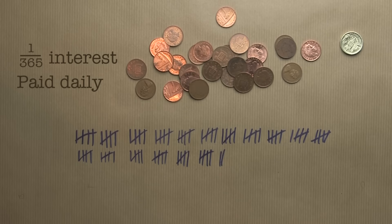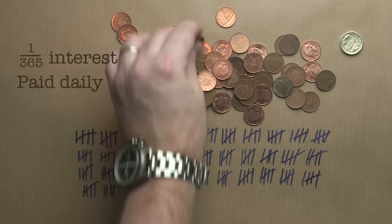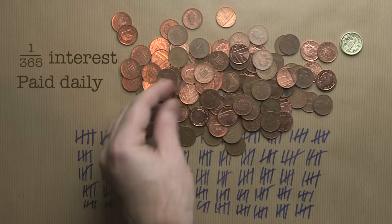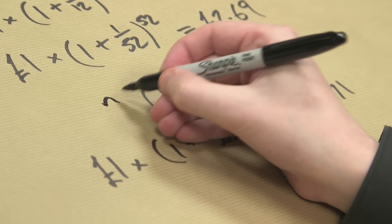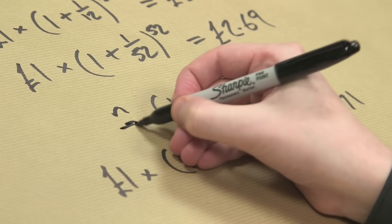It would get better if you did it every second or every nanosecond. What if I could do it continuously? Every instant I'm earning interest — continuous interest. That means if I take this formula, 1 plus 1 over n to the n, and take n to infinity, that would be continuous interest. Now what is that value? And that's what Bernoulli wanted to know. He didn't work it out — he knew it was between two and three.